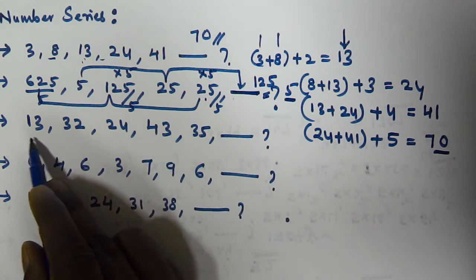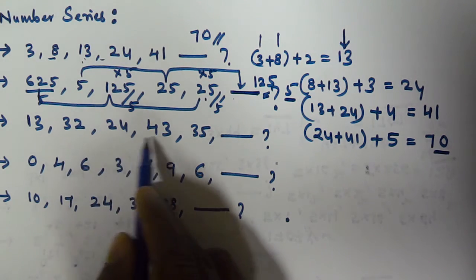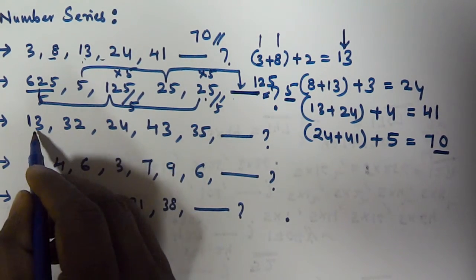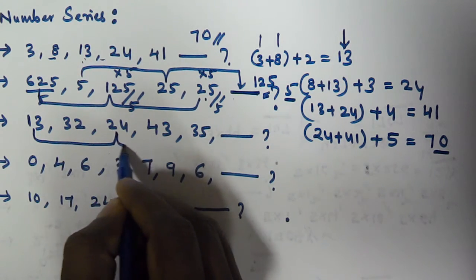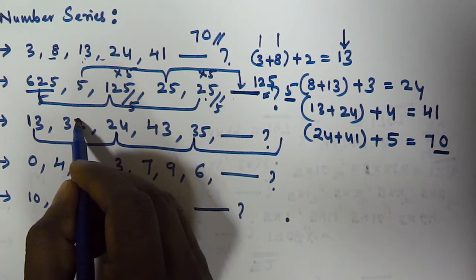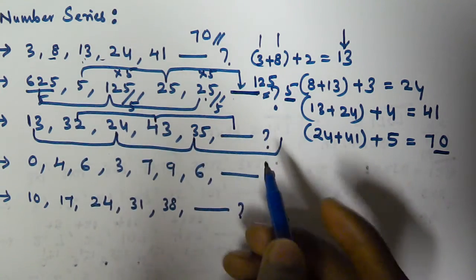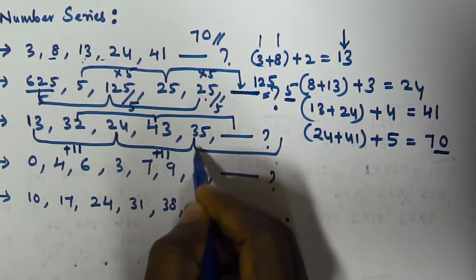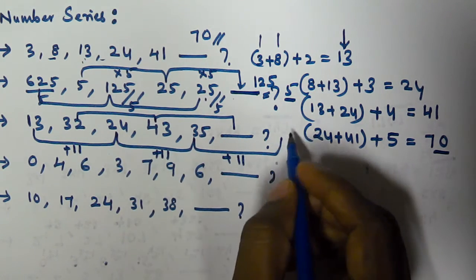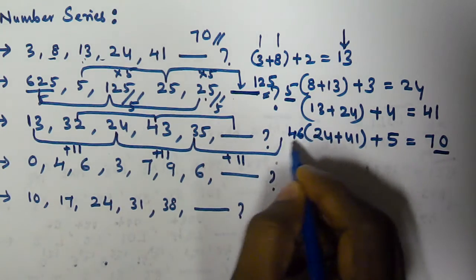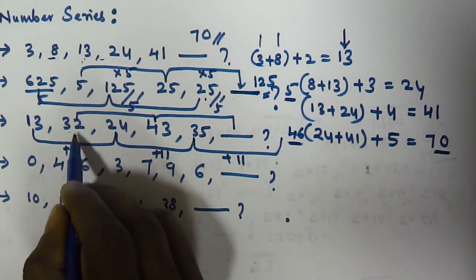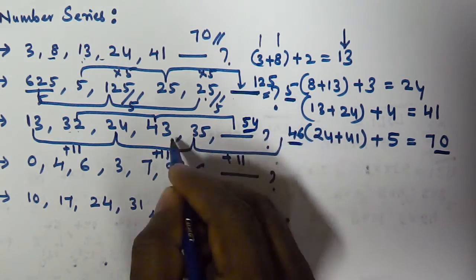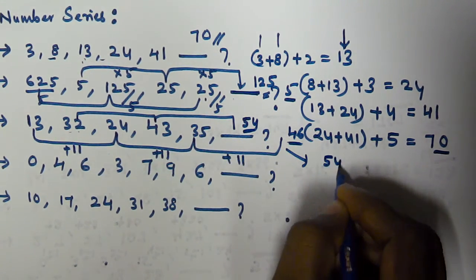The next problem is: 13, 32, 24, 43, 35. There are two interleaved series here. First series: 13, 24, 35 — where 13 plus 11 is 24, and 24 plus 11 is 35, and 35 plus 11 is 46 (the next-to-next). Second series: 32, 43 — where 32 plus 11 is 43, and 43 plus 11 is 54. So the next number we need is 54.